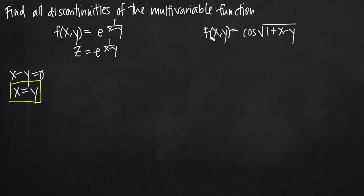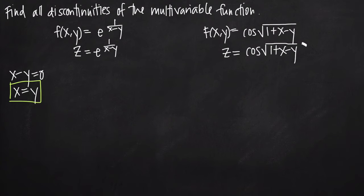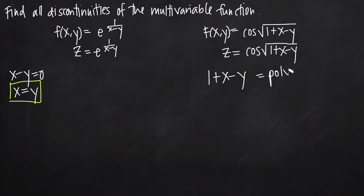For our second function, capital F of x, y — we can also think of this as z is equal to cosine of the square root of 1 plus x minus y. The cosine function is continuous everywhere; it's just a curve that oscillates back and forth between negative 1 and positive 1. Also, 1 plus x minus y is a polynomial function, and polynomial functions are continuous everywhere, so we don't have to worry about that part specifically.